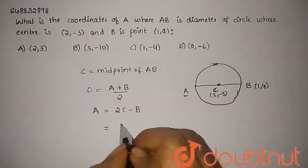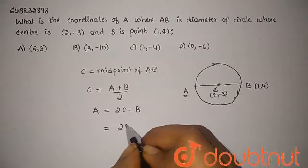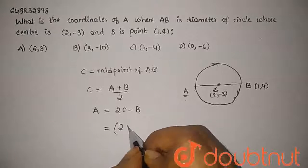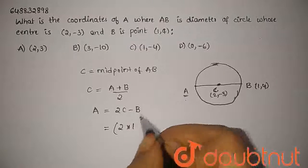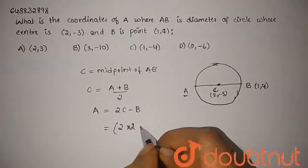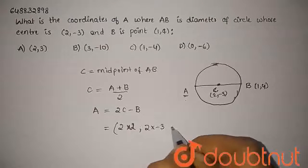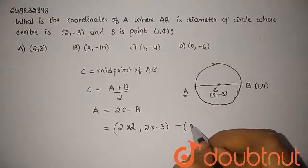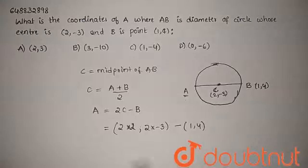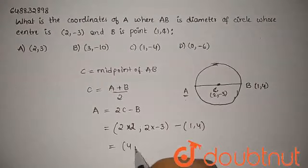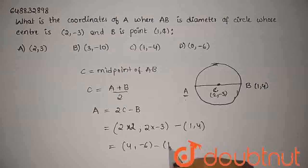And here we can say that 2 into 2, 2 into minus 3 minus B. So, the coordinates of A is 1,4. And this would be 4,6 minus 1,4.